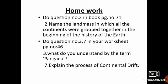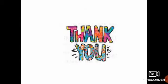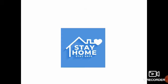This is time for your homework. Do question number 2 in the book, page number 71: Name the landmass in which all the continents were grouped together in the beginning of the history of the Earth. And do question number 3 and 7 in your worksheet, page number 46: What do you understand by the term Pangaea? And explain the process of continental drift. Thank you, children. Stay home.